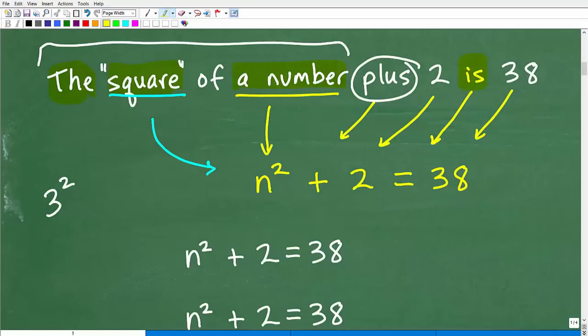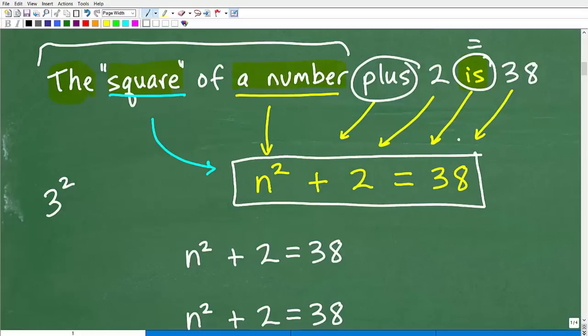Now we have this word is. Now anytime when you're translating a verbal phrase into an algebraic phrase and you come across the word is, this is always the equal sign. So it's is or is equal to. So the square of a number plus two is or is equal to, so we're going to write the equal symbol there, is what? 38, and there you go. So now we translated this verbal phrase into a variable phrase or more precisely an algebraic equation.